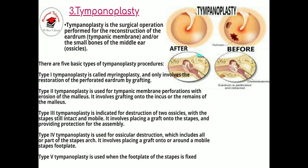Next is tympanoplasty — a surgical operation performed for reconstruction of the eardrum (tympanic membrane) and the small bones of the middle ear ossicles: the malleus, incus, and stapes. There are five basic types of tympanoplasty. The first type, myringoplasty, only involves the restoration of the perforated eardrum by grafting. The second type is used for tympanic membrane perforation with erosion of the malleus and involves grafting onto the incus or the remains of the malleus.